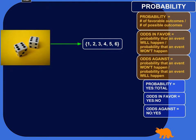Probability is a measure — it's a ratio of the number of favorable outcomes, whatever you're trying to look at, versus the number of total possible outcomes.